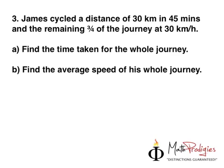So, let's take a look at question number 3. I want you to have your question paper at hand. And it says, James cycled a distance of 30 kilometers in 45 minutes, and the remaining three-quarter of the journey at 30 kilometers per hour. So, part A asks you to find the time taken for the whole journey, and part B says, find the average speed of his whole journey.